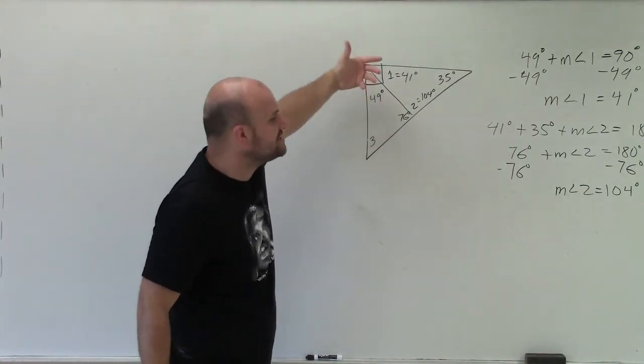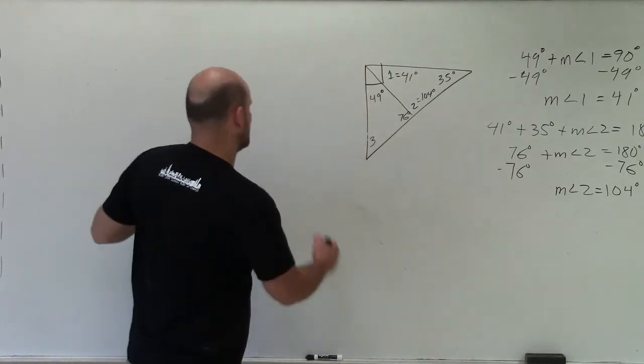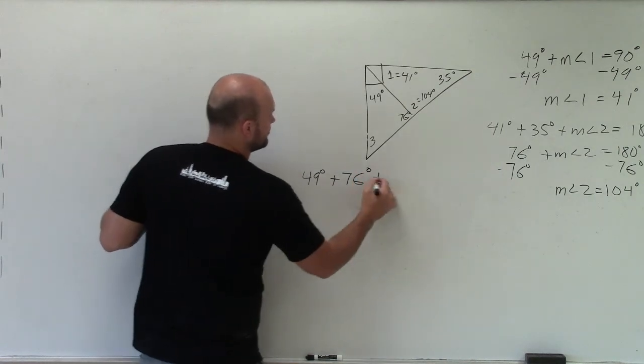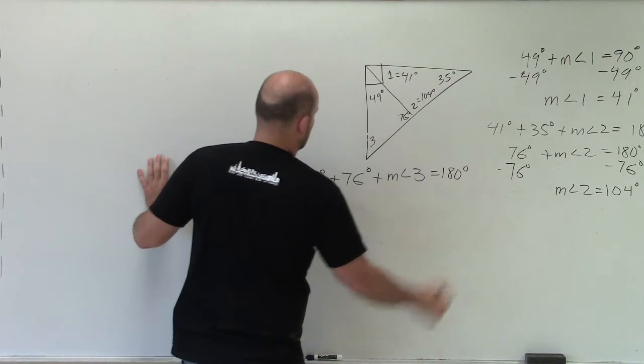We can use the interior sum theorem again for triangles by adding up these three angles. So I can say 49 degrees plus 76 degrees plus the measure of angle 3 is equal to 180 degrees.